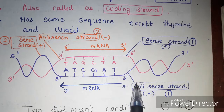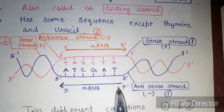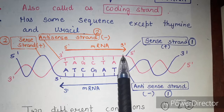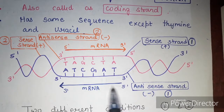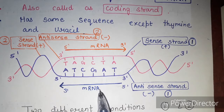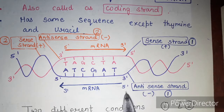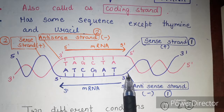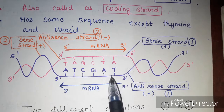When the promoter is here and transcription starts in the 5-prime to 3-prime direction — shown by arrows — the purple strand is the antisense strand and template strand. The other strand is the sense strand or coding strand. The sense strand is named so because its sequence is the same as the mRNA sequence. The only difference is that mRNA contains uracil whereas the sense strand (DNA) contains thymine.